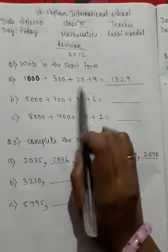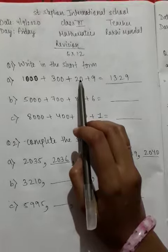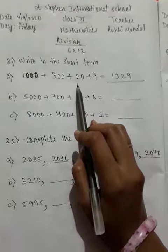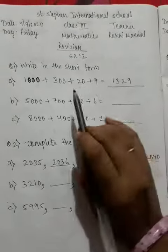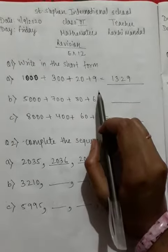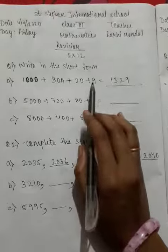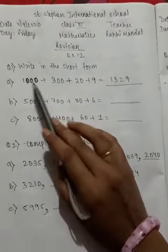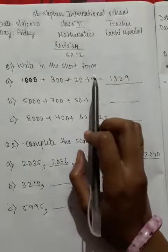So this is the expansion form. You know how to expand the number, so today we will learn how to write short form through this expanded form. So, 1329.